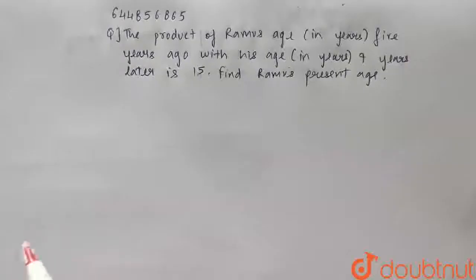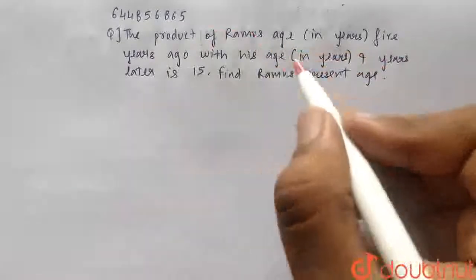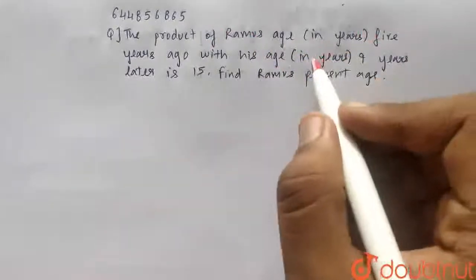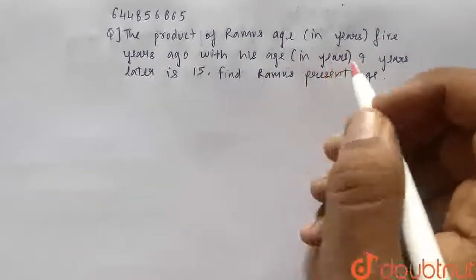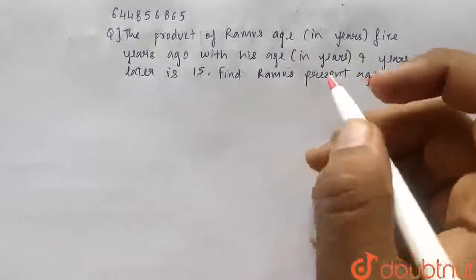Hello students, so the question for today is: the product of Ramu's age in years 5 years ago with his age in years 9 years later is 15. We have to find Ramu's present age.